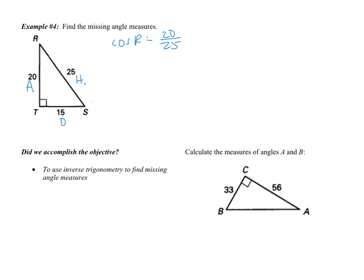I'm going to say the cosine of angle R equals adjacent over hypotenuse, so 20 over 25. Now, this is going to simplify, but that doesn't matter — you don't need to simplify it. How do I get rid of that cosine? Well, I take the inverse. So I'm going to do the inverse cosine on the left side — that's what the cosine negative 1 means — and then the inverse cosine on the right side. The inverse cosine and the cosine cancel each other out.